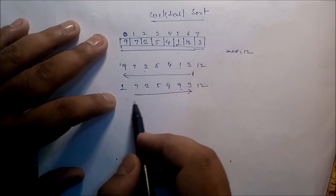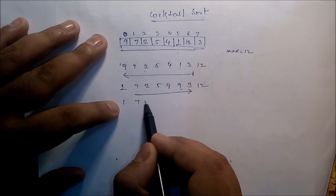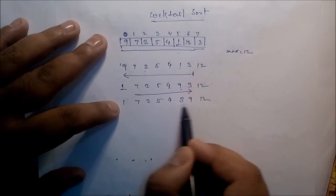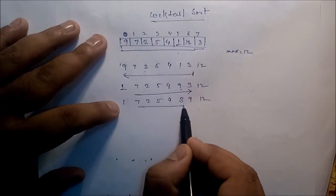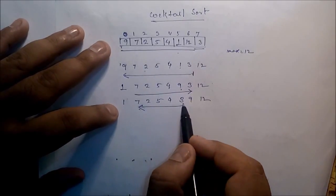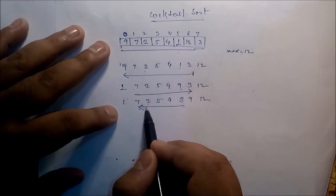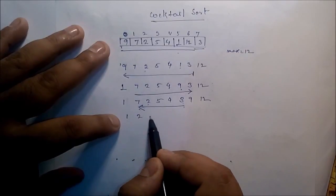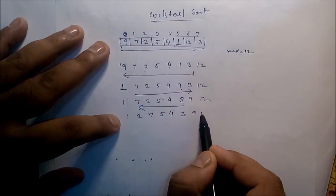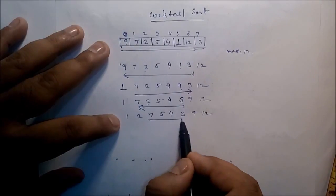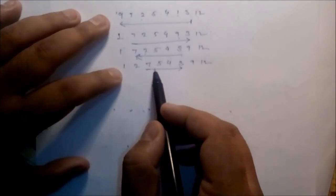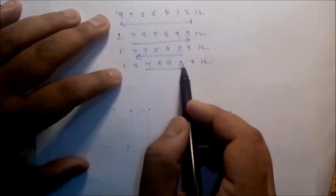Check data from left to right and identify the maximum value. The maximum is nine. Now move from right to left and check the minimum — the minimum is two. The result becomes: one, two, seven, five, four, three, nine, twelve.